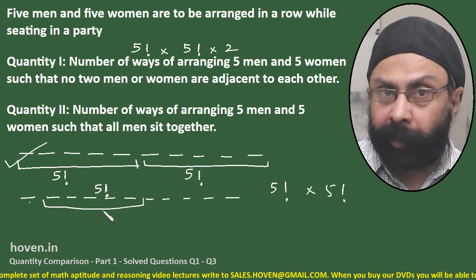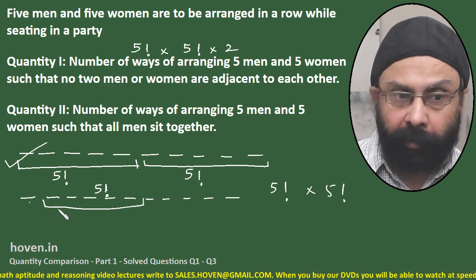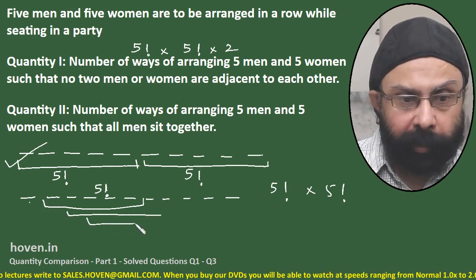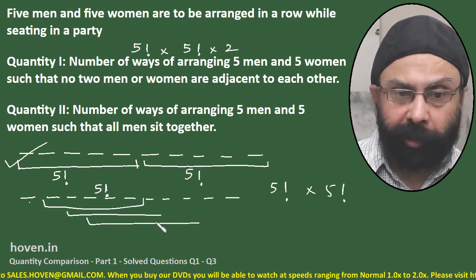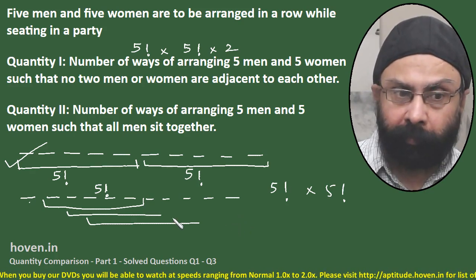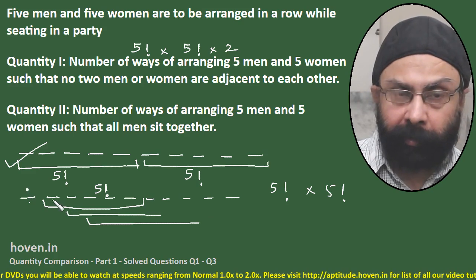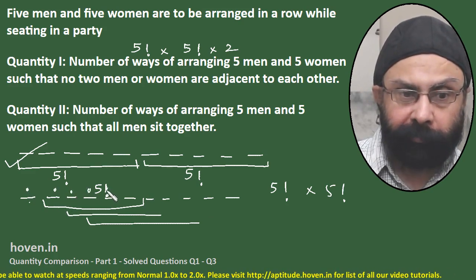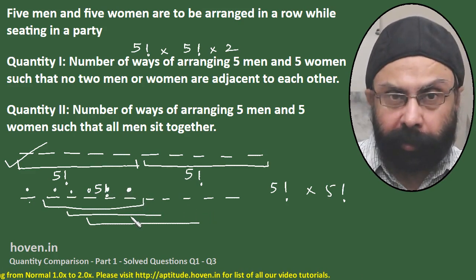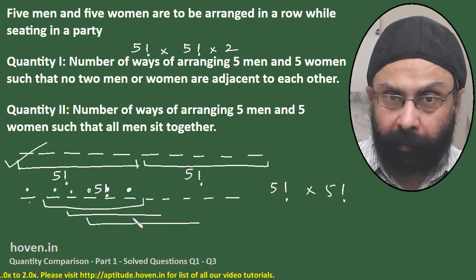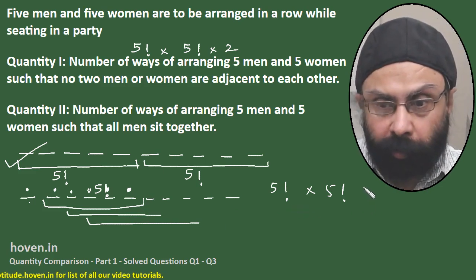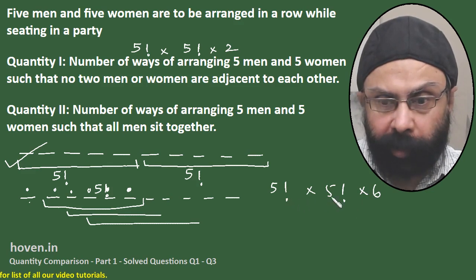Counting the number of ways the men can appear together as a block: men can start at position 1, 2, 3, 4, 5, or 6 — that gives 6 different block positions. For each arrangement, we have 5! × 5! combinations.